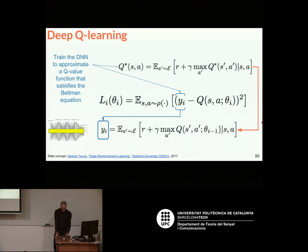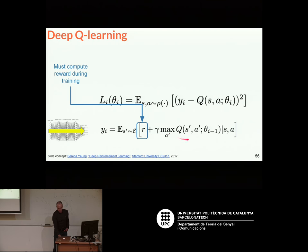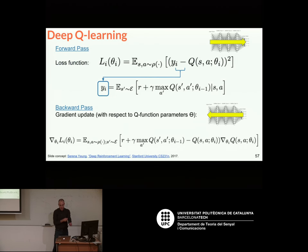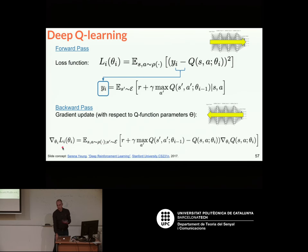Just notice that to train a network approximating the Bellman equation, during training it's necessary to compute the reward for the current state and action. This means if you really want to train a network that estimates the maximum reward you can obtain for each state, you actually need to have the video game playing and giving you the rewards, so you can put them in the equation and compute the loss function. This loss function is differentiable — here you have the gradients. That's how we have everything: the loss function and the gradient update for the backward pass.